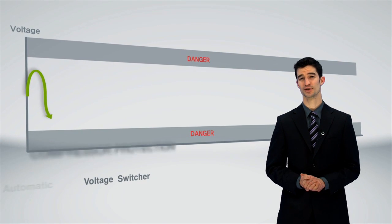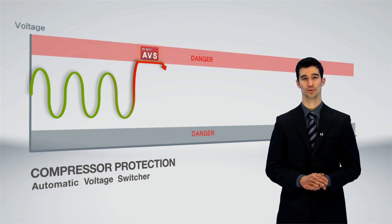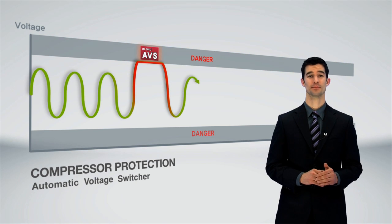The prime feature of LG's automatic voltage switcher is automatic over-voltage protection. In other words, it protects your AC from power fluctuations.